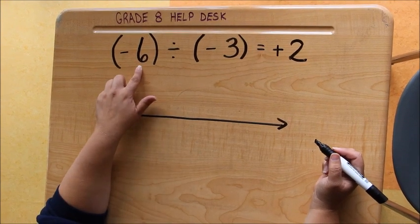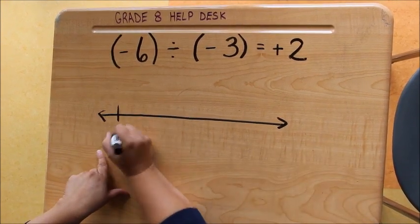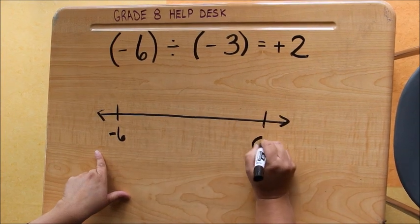Remember that your dividend is the end point of your number line, and you're always starting your number line at 0.